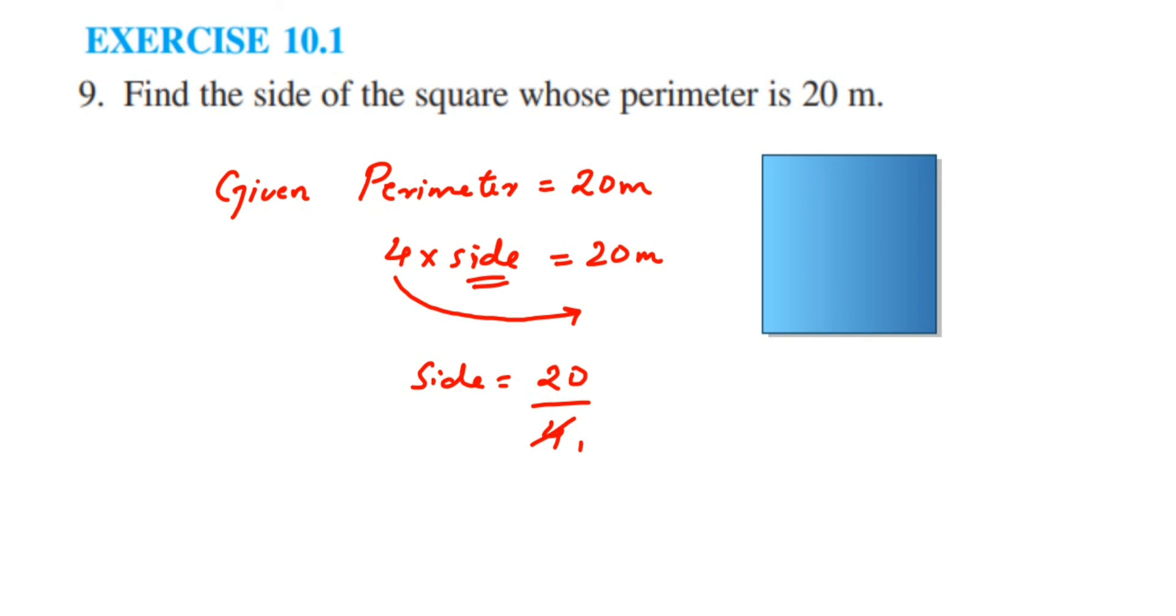Now, 4 ones are 4 and 4 fives are 20. You can cancel the number or you can divide the number—you'll get the same answer. Therefore we got the side. Side is equal to 5 meters.